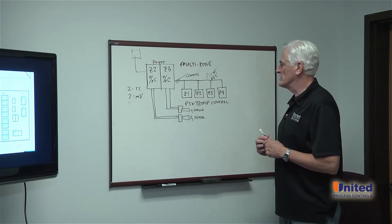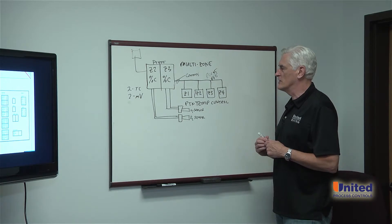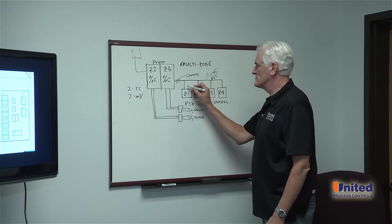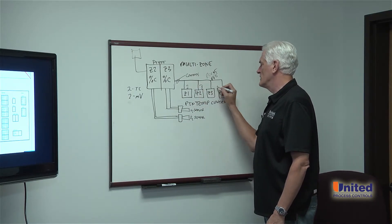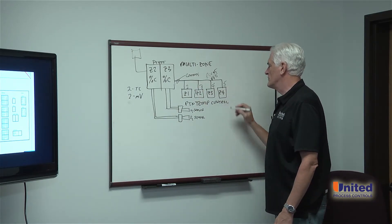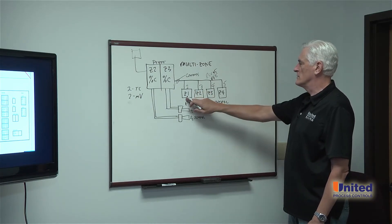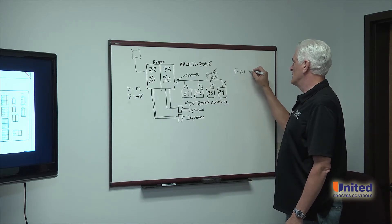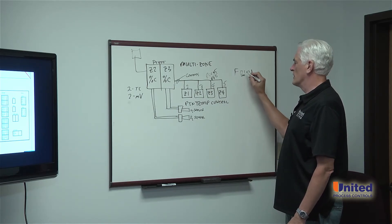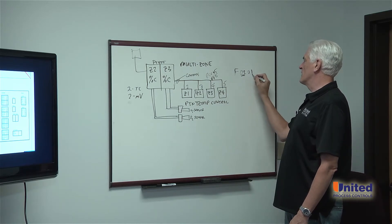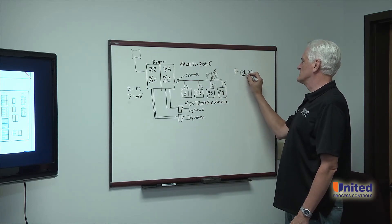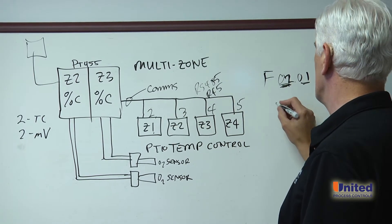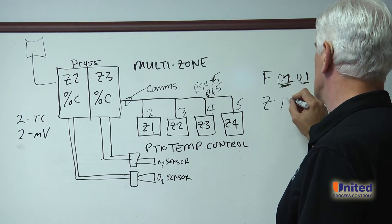For example, if there's a recipe for a setup, I can manage each one of these set points by using the flag and Z opcode in the recipe. If I configure these as flag two, three, four, and five, and I wanted to change the set point on zone one controller, I would issue flag zero two, zero one to turn the flag on.